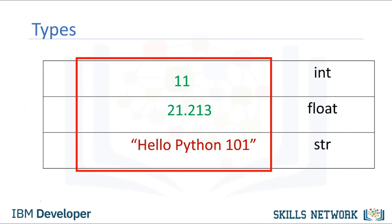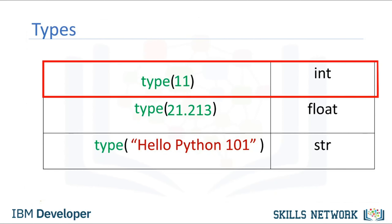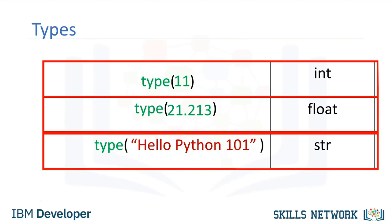The first column indicates the expression. The second column indicates the data type. We can see the actual data type in Python by using the type command. We can have int, which stands for integer, and float, which stands for a real number. The type string is a sequence of characters.